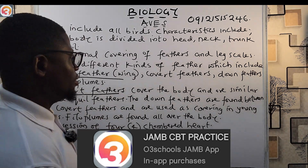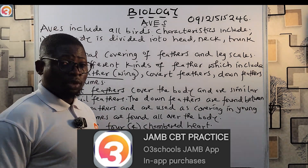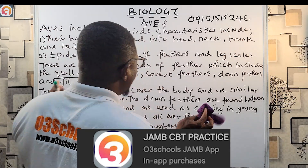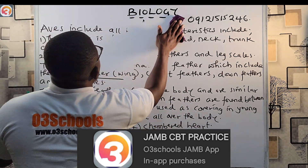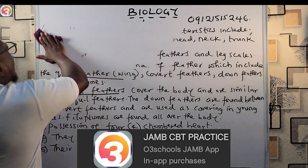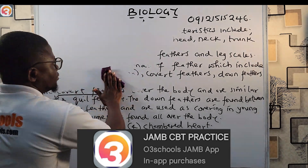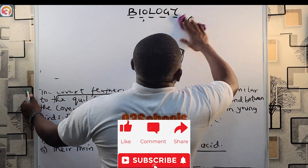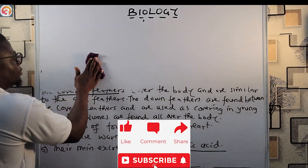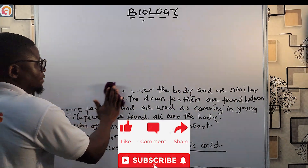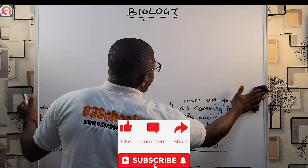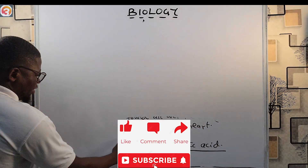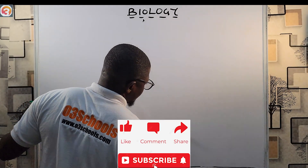Now let's look at Class Mammalia to round up the vertebrates. Mammals are the most advanced group of vertebrates — among all the vertebrates, mammals are the most advanced.